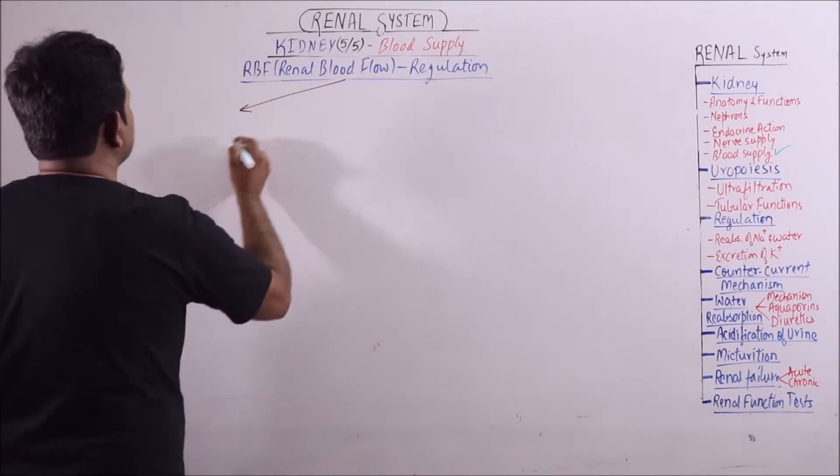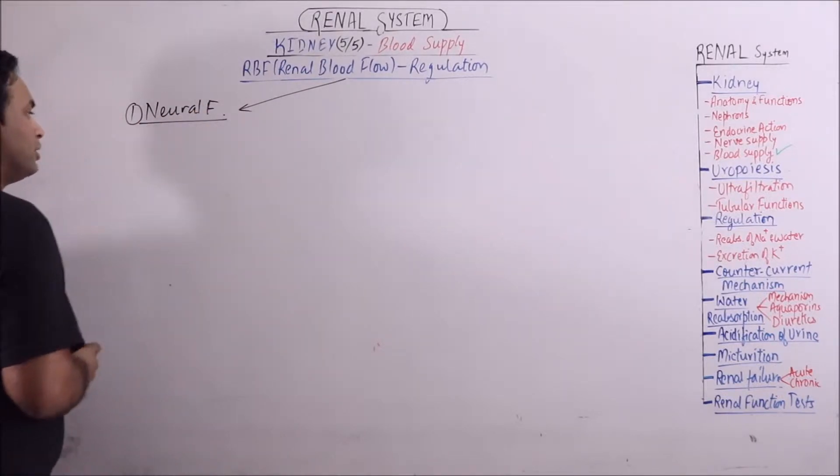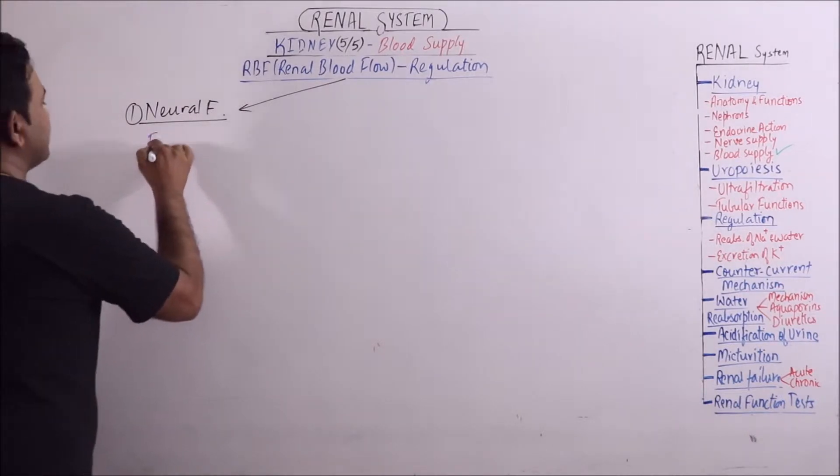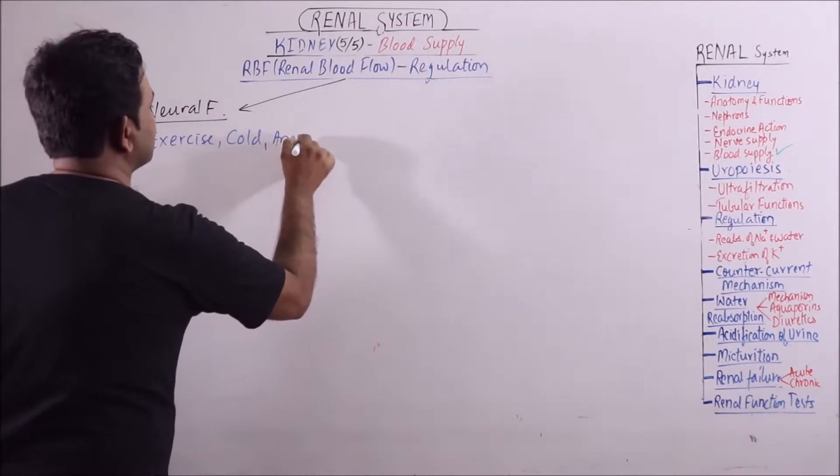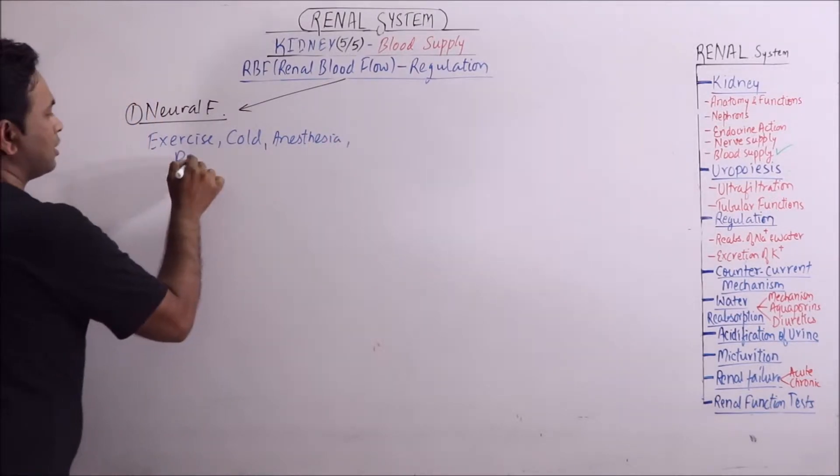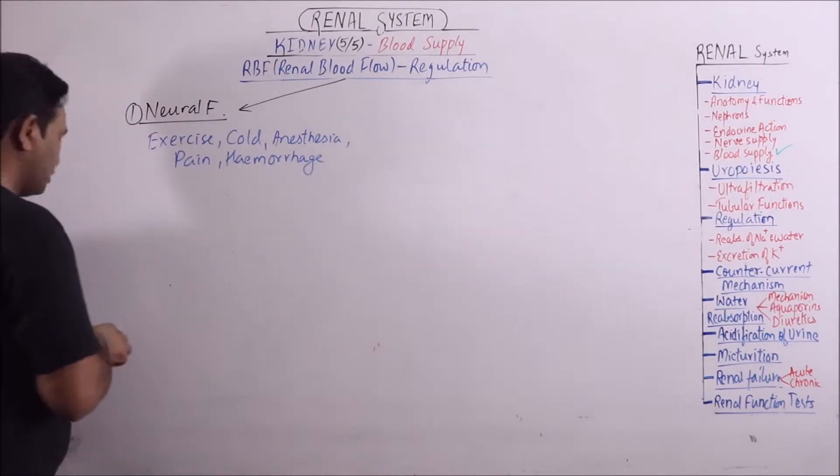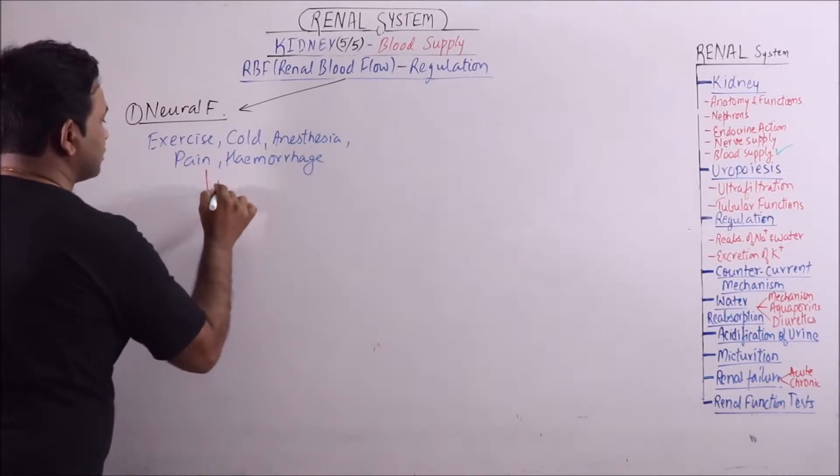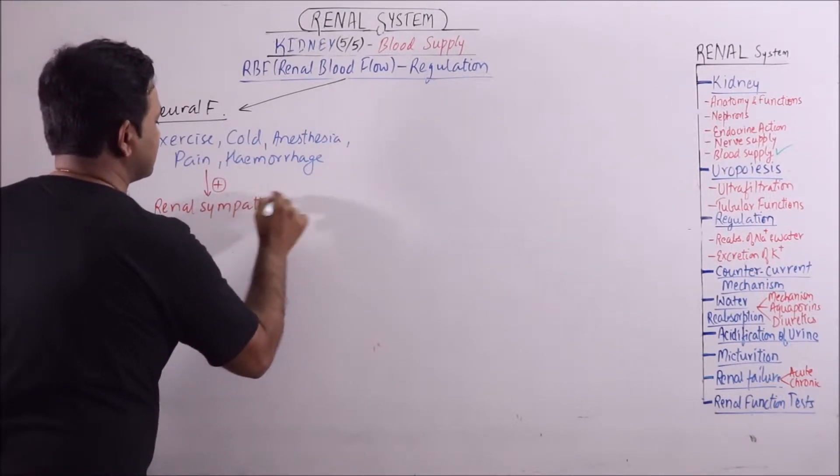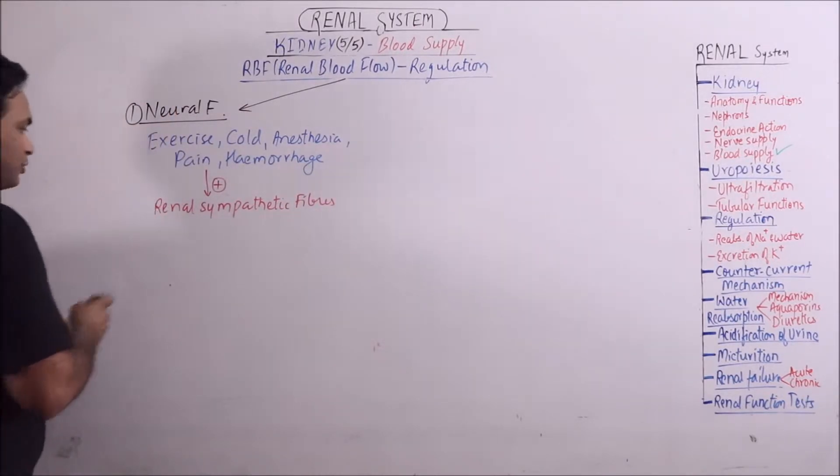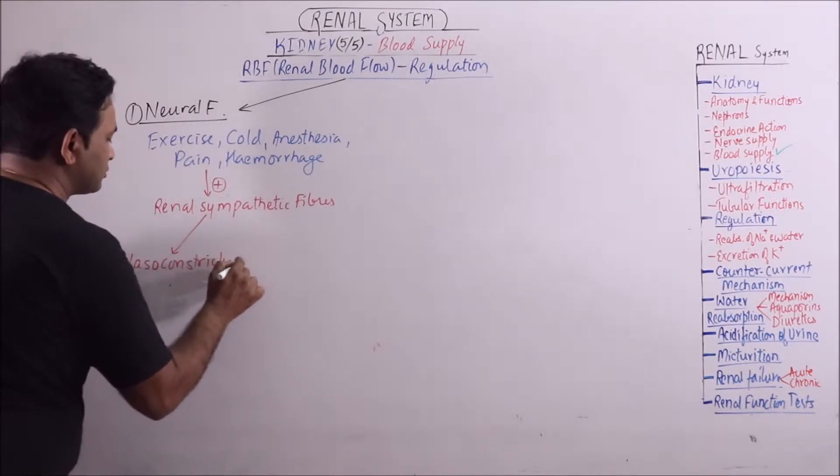Now first one is neural factors that regulate the RBF. Conditions like exercise, cold, anesthesia, pain and hemorrhage.